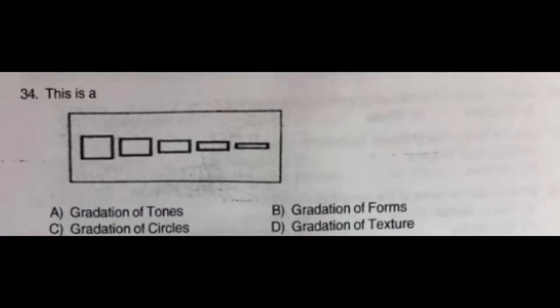Question number thirty-four: This is a — option A: gradation of tones, option B: gradation of forms, option C: gradation of circles, option D: gradation of texture. The correct answer is option B: gradation of forms. Question number thirty-five: It's flying — option A: right to left, option B: north to west, option C: left to right, option D: west to east. The correct answer is option C: left to right.